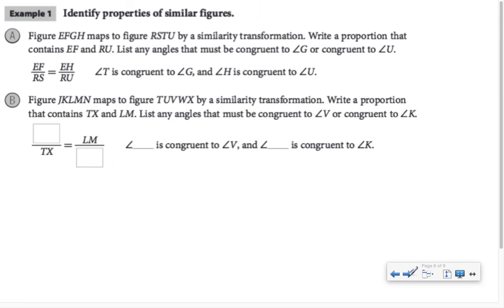In example one, we're identifying some properties of similar figures. They've told us that EFGH maps to figure RSTU by a similarity transformation, so we know that they're similar. Write a proportion that contains EF and RU. EF corresponds to RS, and RU corresponds to EH. List any angles that must be congruent to angle G or U. G is the third letter, must be congruent to T. H is the last letter, so it would have to be congruent to U.